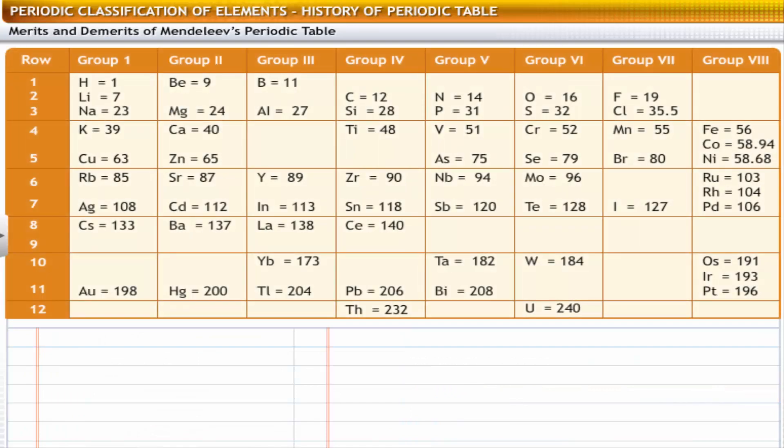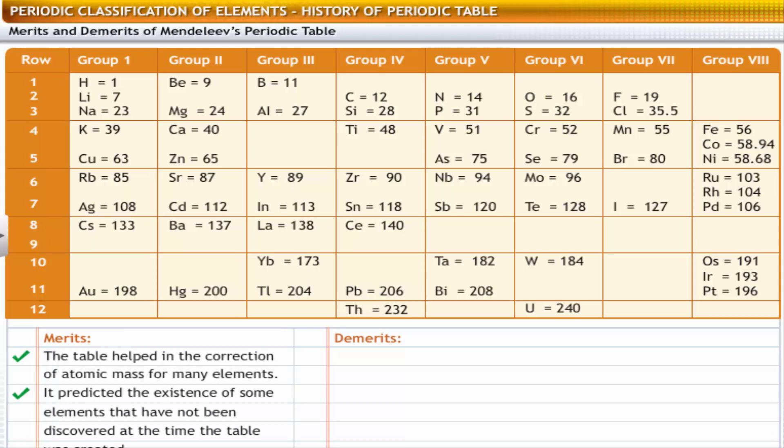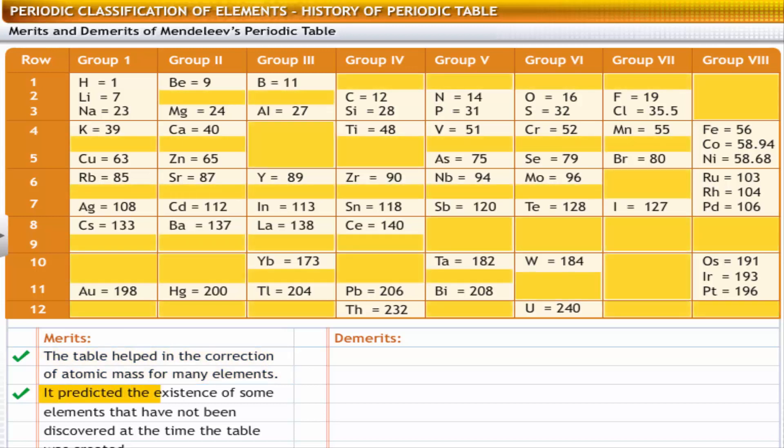Like other attempts at classification of elements, Mendeleev's periodic table also had some merits and demerits. Let's take a look at the merits first. The table helped in the correction of atomic mass for many elements. It predicted the existence of some elements that had not been discovered at the time that the table was created. Because of its merits, the periodic table is widely accepted as a system of classification.